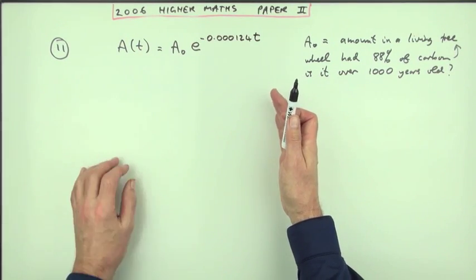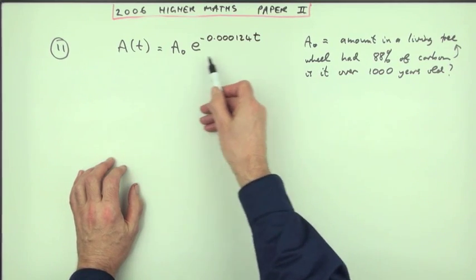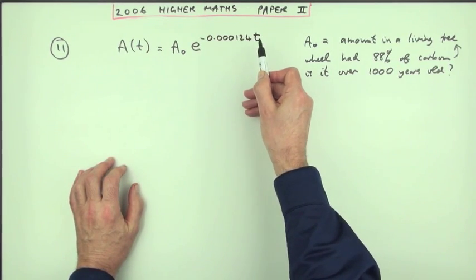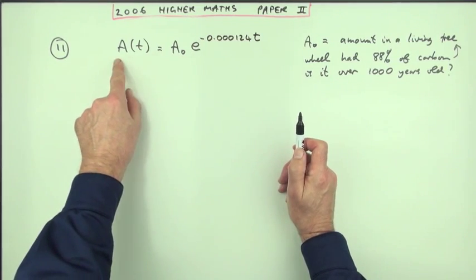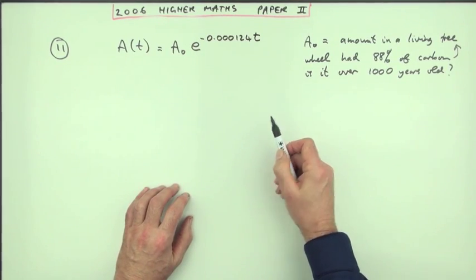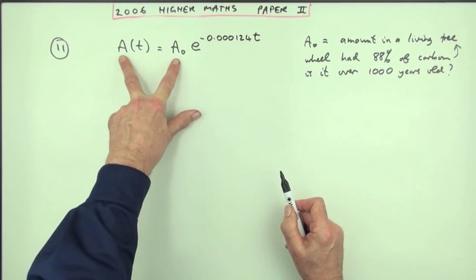Now the direct way to do this is just find out from the information here how old is this wheel. Now it may look like there's three unknowns here but only one number to put in but these two are connected.